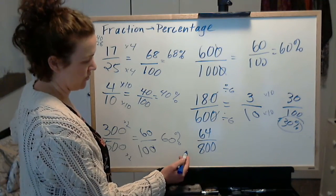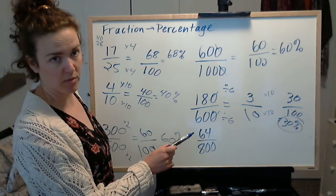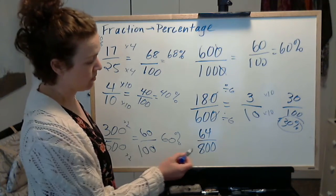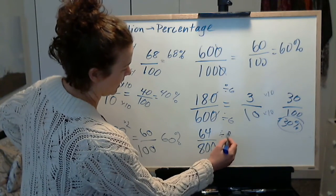64 out of 800. I recognize 64, I know it's divisible by 8, and 800 is also divisible by 8. So I'm going to divide top and bottom by 8.